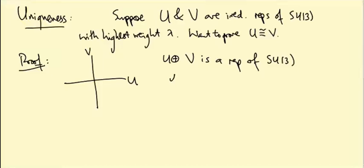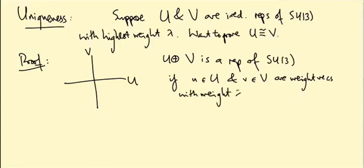And if little u in U and little v in V are highest weight vectors, so weight vectors with weight lambda, then (u, v), in other words, this point in U direct sum V, is a weight vector also with weight lambda.